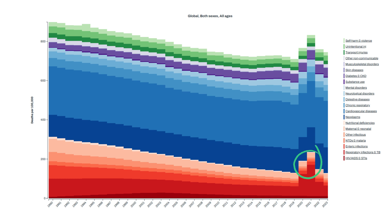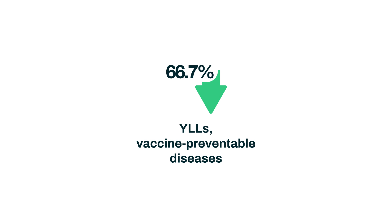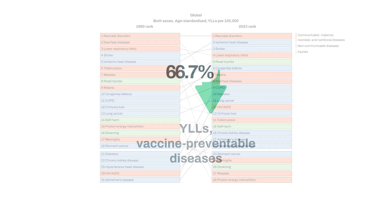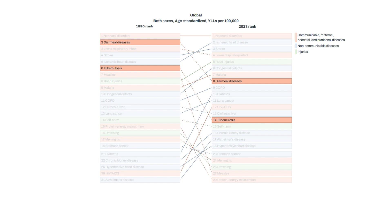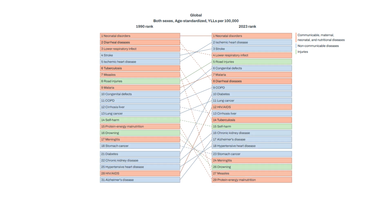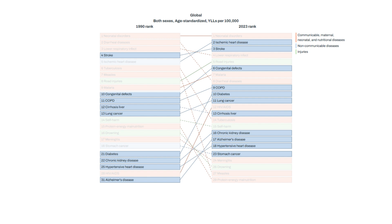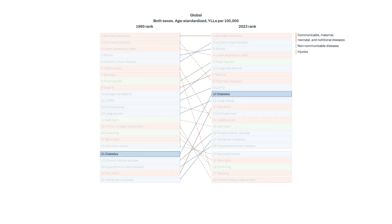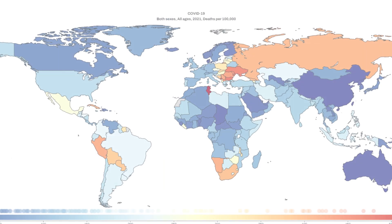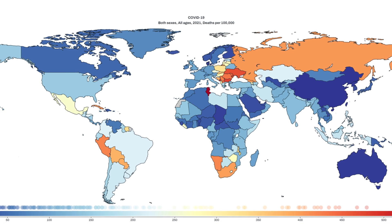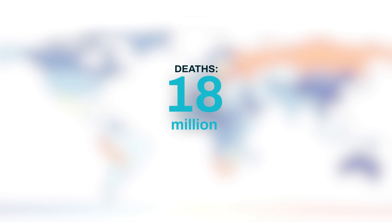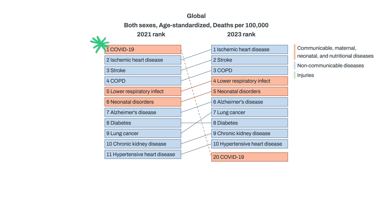COVID-19 explains the jump in respiratory infections and TB from 2020 to 2022. In addition, there was a 66.7% decrease in YLLs from vaccine-preventable diseases — a nearly two-thirds drop between 1990 and 2023. Diarrhea and tuberculosis, major childhood killers, have also seen big drops in YLLs since 1990. Meanwhile, we're seeing increases in non-communicable diseases, with particularly large increases in diabetes. This study also captures the single biggest shock to global health in the 21st century, the COVID-19 pandemic. We estimate that 18 million people died from COVID-19 between 2020 and 2023. By 2021, it was the number one cause of death in the entire world, replacing heart disease and stroke. But by 2023, it had fallen all the way down to 20th place.